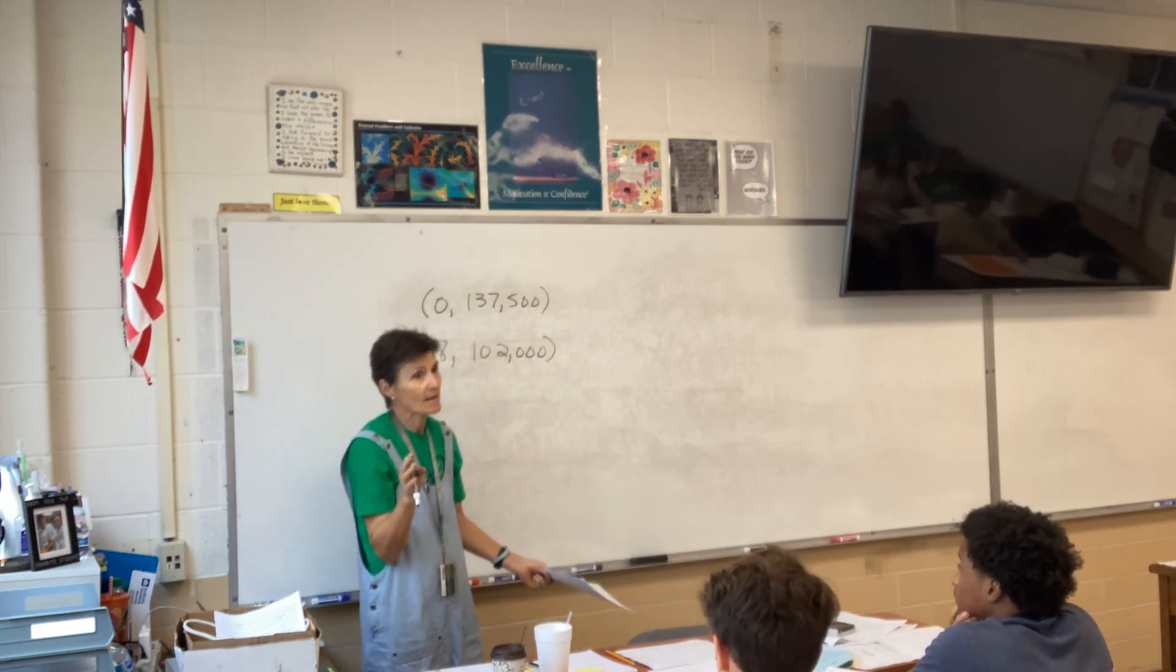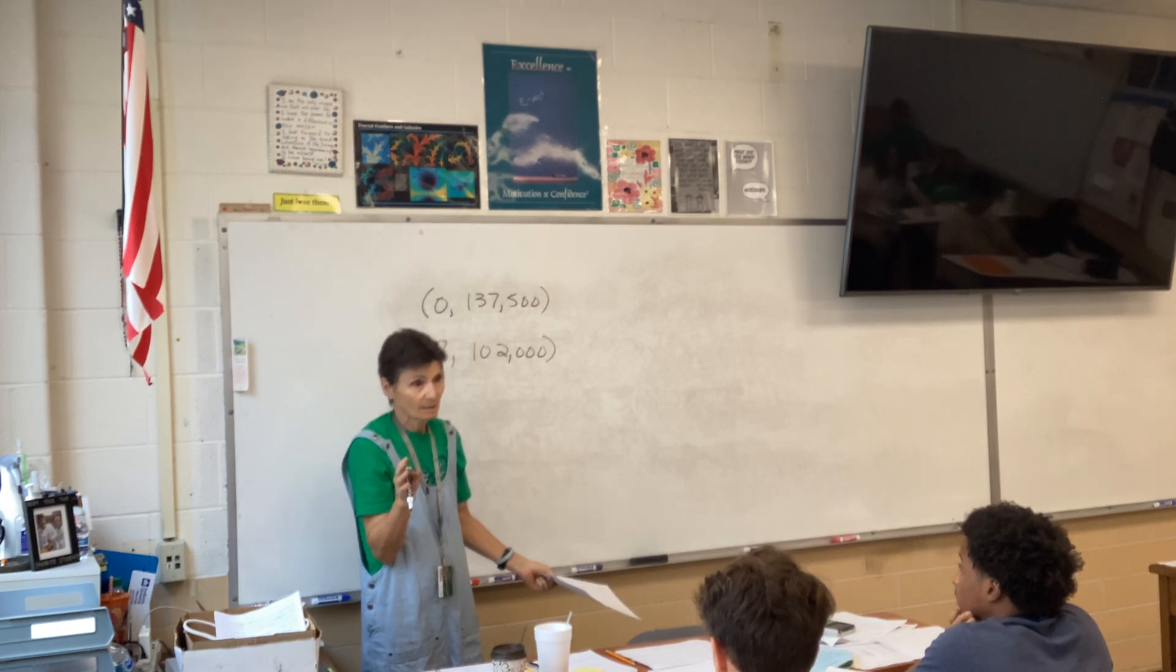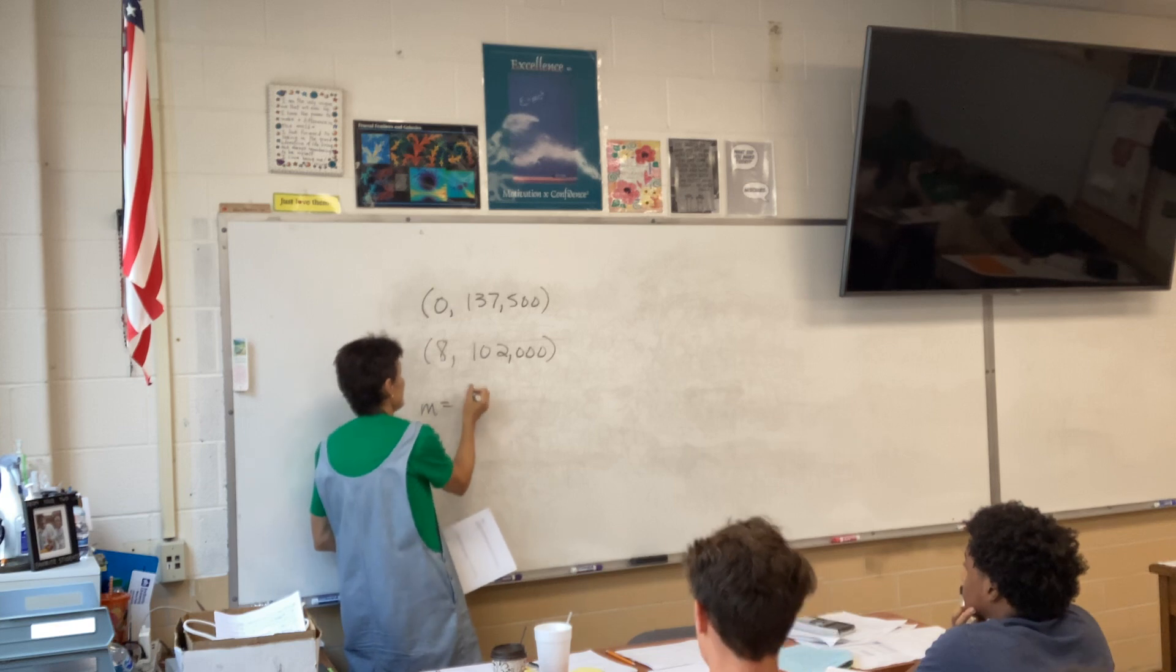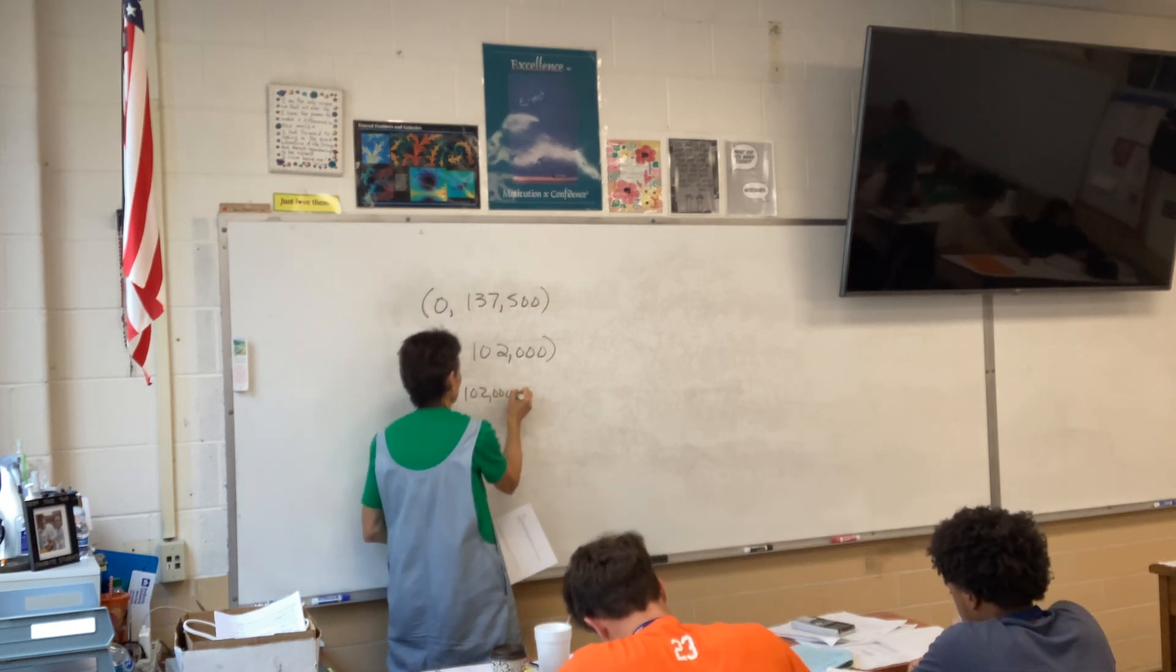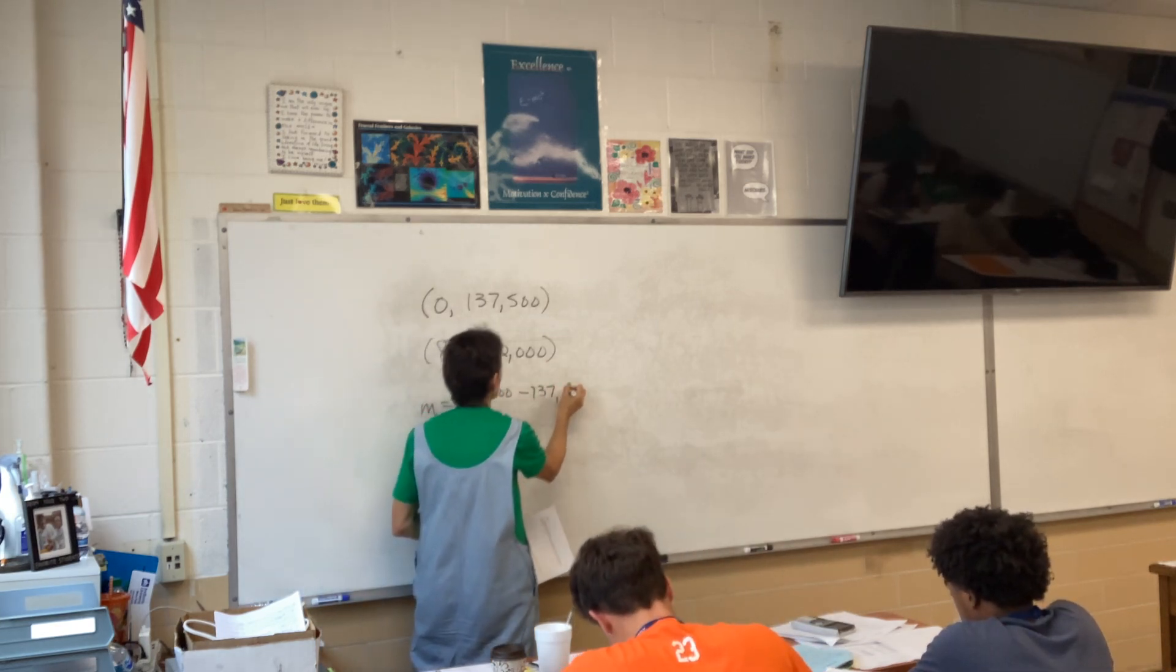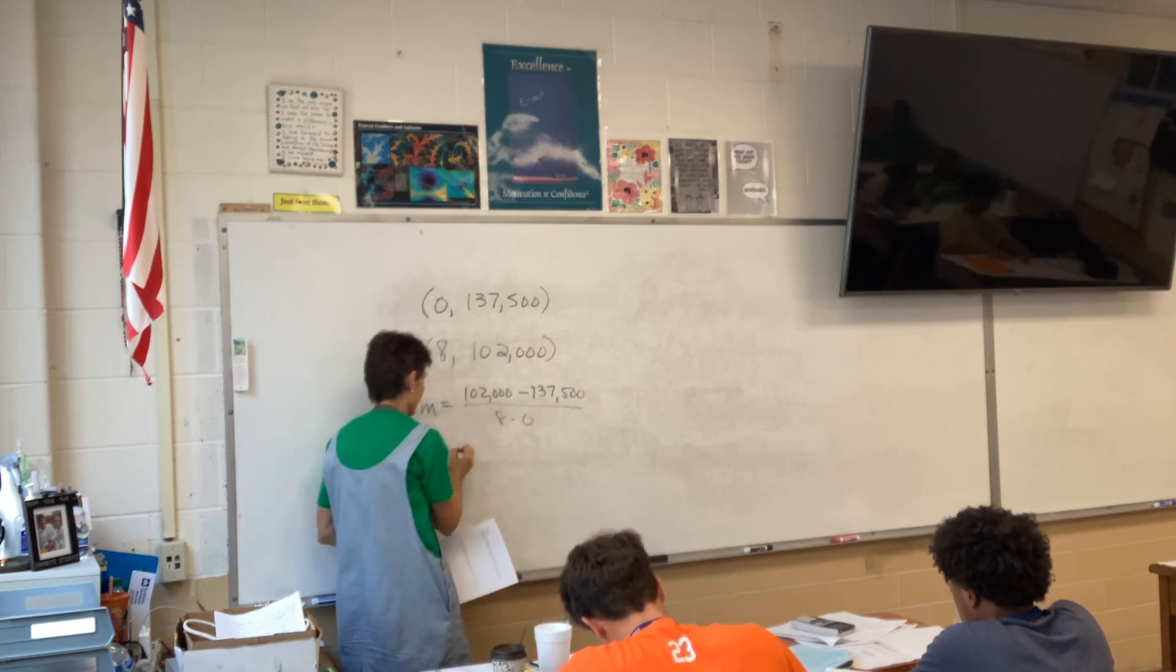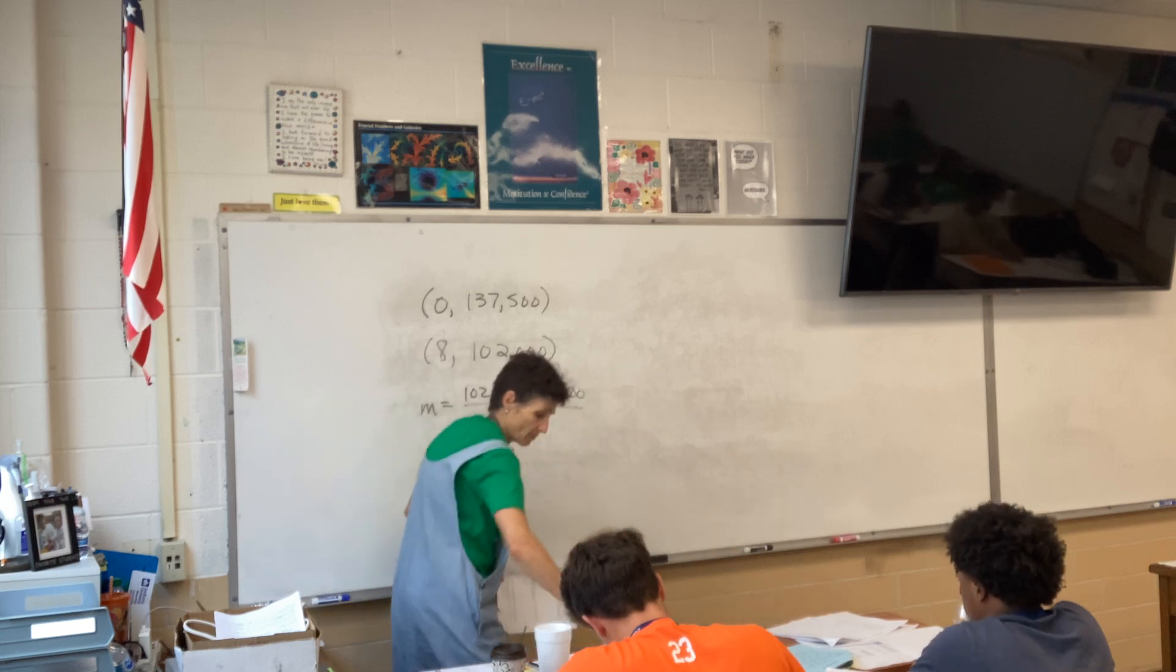Find a linear equation. That's just a fancy way of saying write the equation of the line. So what do we need to write the equation of the line? We need slope. So $102,000 minus $137,500 over 8 minus 0. Does that look okay to you? Yep.